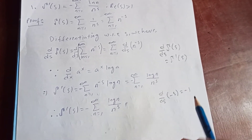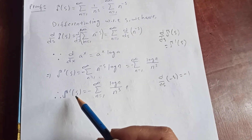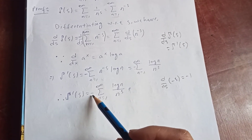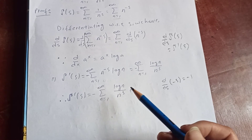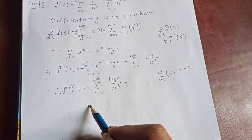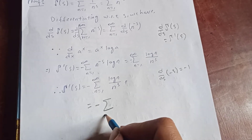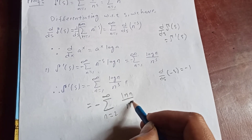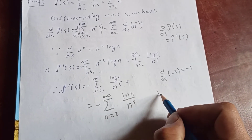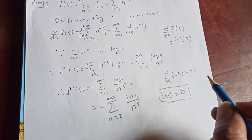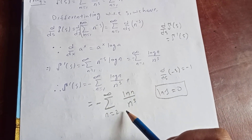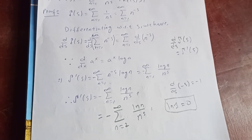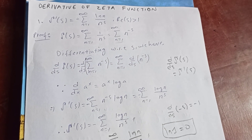Therefore, zeta prime of s — the derivative of the zeta function with respect to s — is minus the sum from n equal to 1 to infinity of log n over n to the s. We can simplify further: the sum actually starts from n equal to 2 to infinity, because when n equals 1, log 1 equals zero. This completes the simple proof of the derivative of the Riemann zeta function.